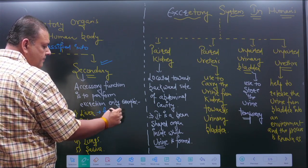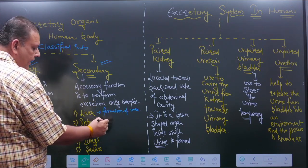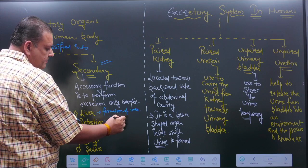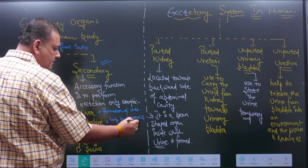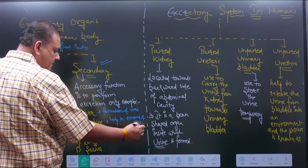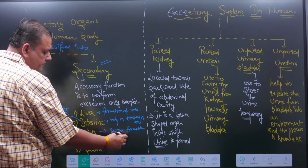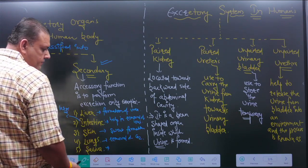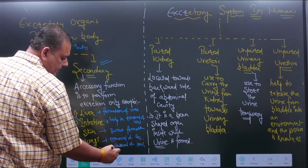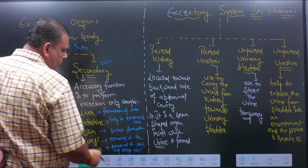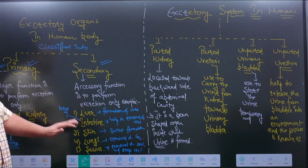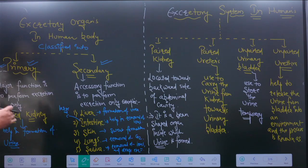Examples of secondary excretion organs include: the liver, which helps in the formation of urea; the large intestine, which helps in the removal of ions; the skin, which helps in sweat formation; the lungs, which remove carbon dioxide; and saliva, which helps in the removal of certain ions and drugs. These organs perform several different important functions but also help in the removal of metabolic waste.